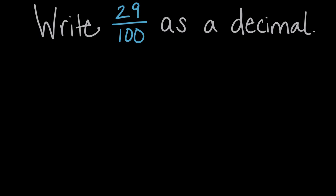Let's write 29 hundredths as a decimal. So we'll start with 29 over 100. Let's start breaking that down so we can get to place values, because place values will help us convert to write this as a decimal.